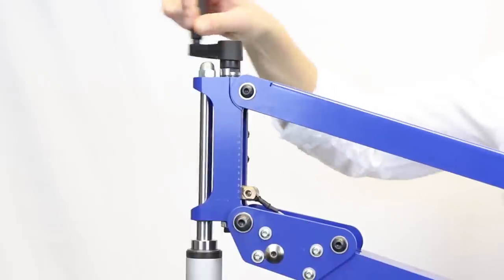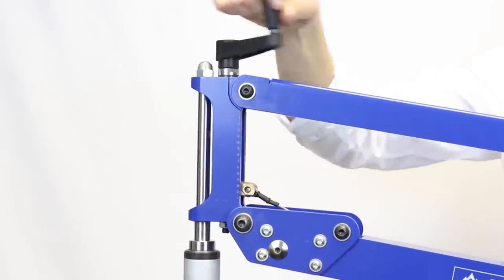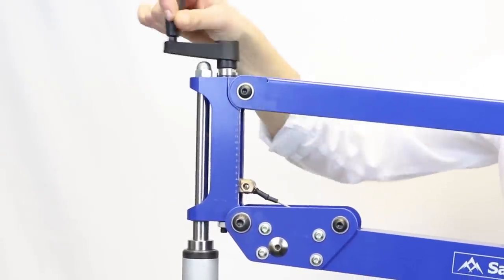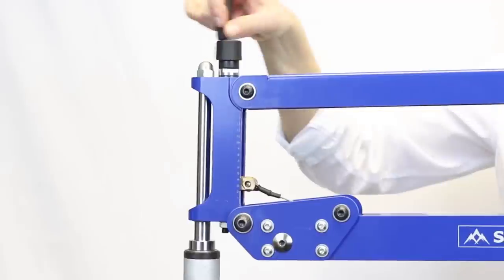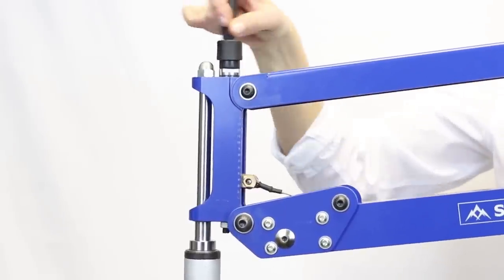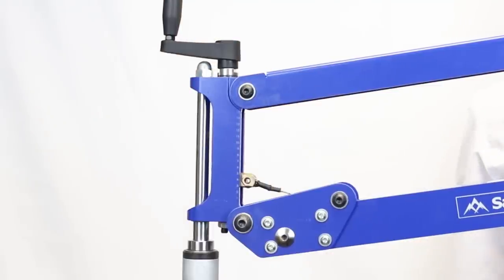Then if you want to give them more assistance to move through range keep increasing the tension handle up. As they improve over time you can start to reduce the tension on the tension scale.